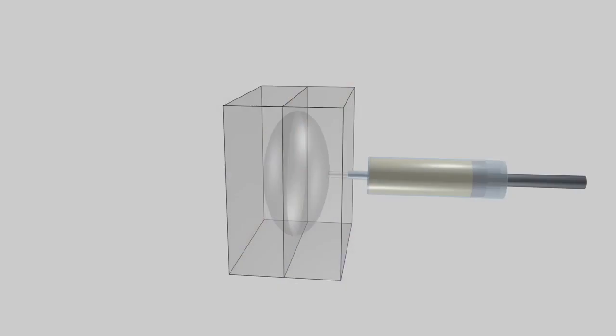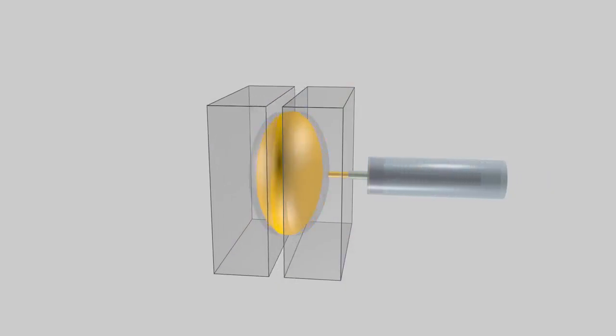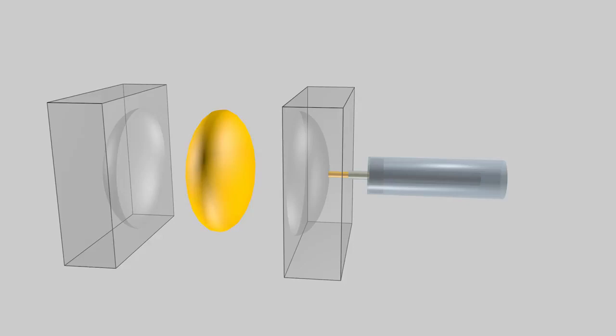In principle, injection molding is simple. Melt plastic, inject it into a mold, let it cool, and then out pops a plastic product. In reality, injection molding is an intricate and complex process.